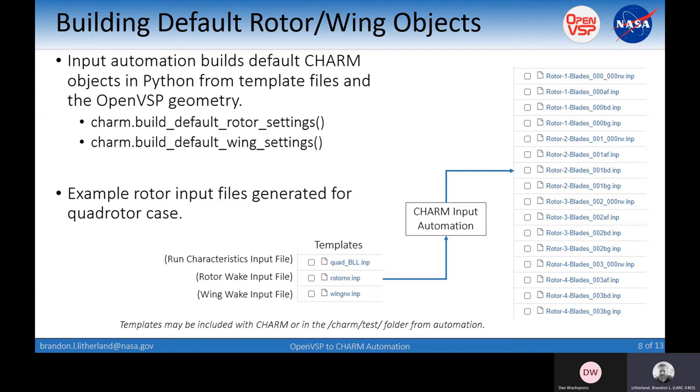The template files themselves, some are included with CHARM. Some of them you can find in the CHARM test folder from the package that comes with OpenVSP. If you need something particular, you can reach out to CDI or other users of CHARM and try to get a template file that way.